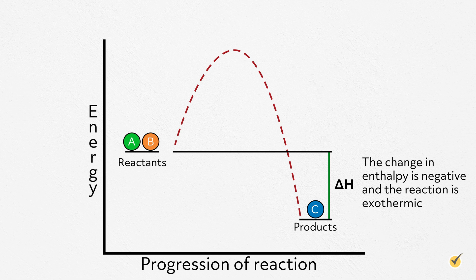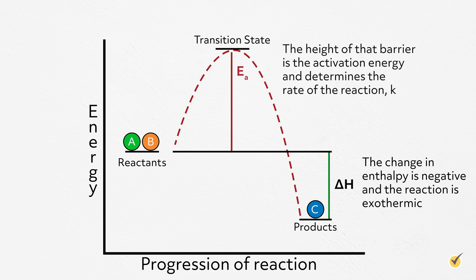Now let's turn to the kinetics of the reaction. As the reactants convert to products, the energy of the system increases as bonds begin to stretch and break, peaking at the high-energy transition state before reaching their new low-energy configuration. The height of that barrier is the activation energy and determines the rate of the reaction, k. The larger the barrier, the slower the reaction, and vice versa.